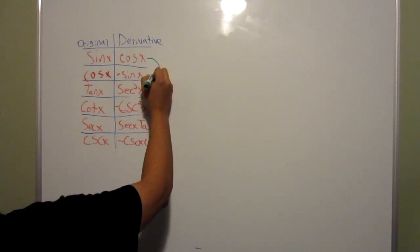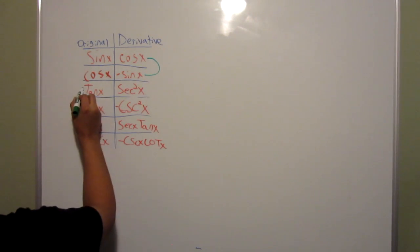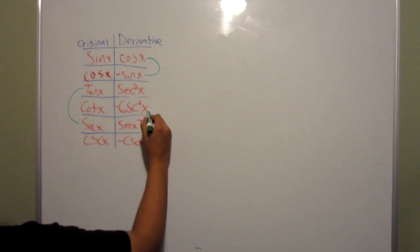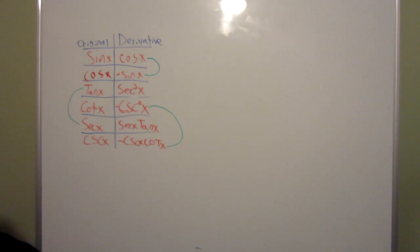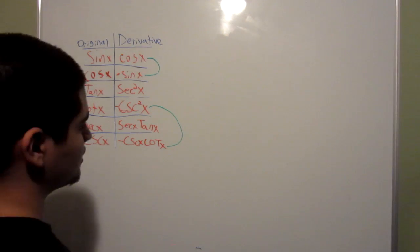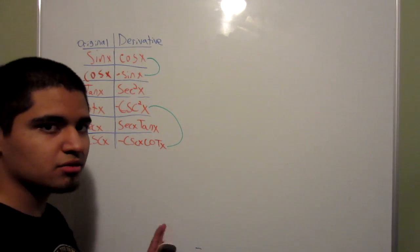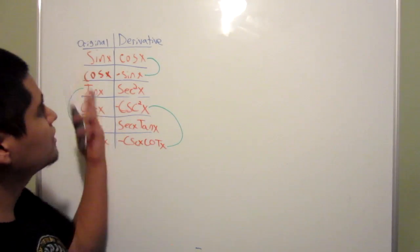So to summarize, cosine and sine are paired up together, tangent and secant are paired up together, and cosecant and cotangent are paired up together. So these are just two different ways in order to memorize the derivative of trig functions.